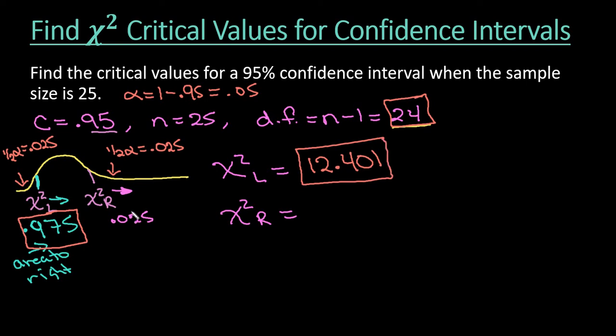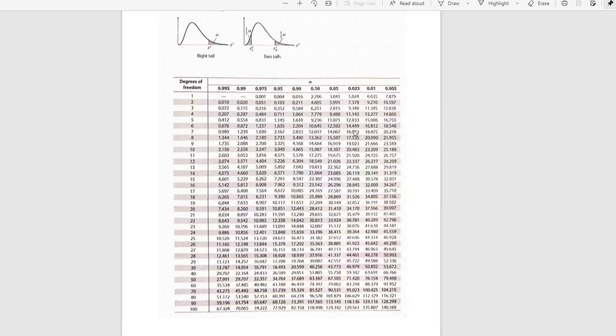Now, to find the critical value to the right, I'm going to look at the 0.025, and again, I'm going to use the 24. And so if I go to my table, I would find the 0.025, and I would come down until I found 24, and I see that it's 39.364.